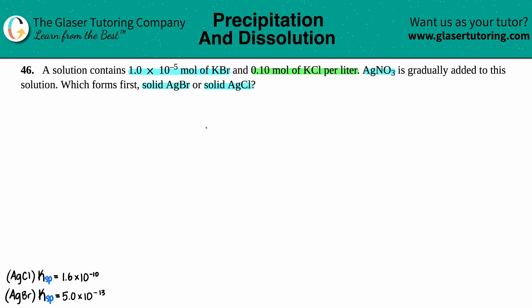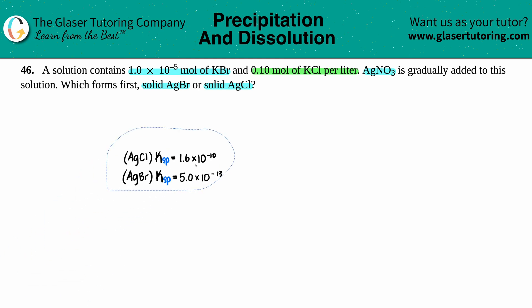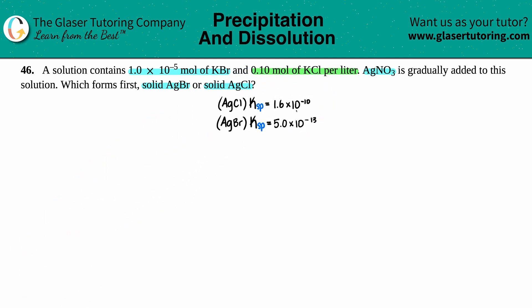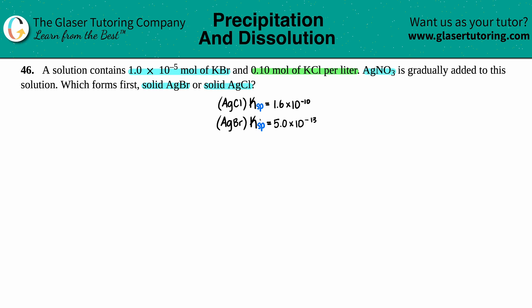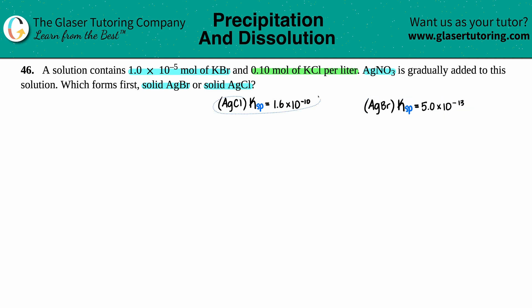They gave us the two compounds already, so I went to the back of the textbook to find the Ksp values. The Ksp for AgCl is 1.6×10⁻¹⁰, and the Ksp for AgBr is 5.0×10⁻¹³. We're going to use these two to see which solid forms first. I'll put AgBr on the left side and AgCl on the right side, and work one at a time.